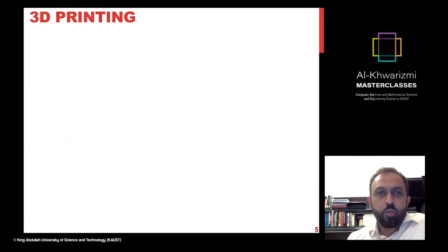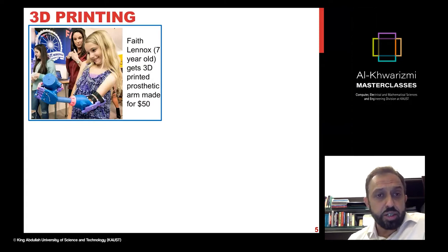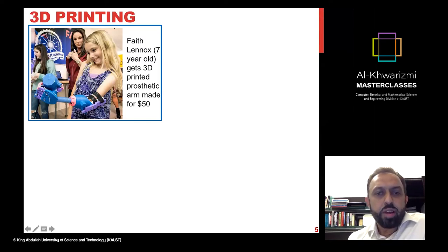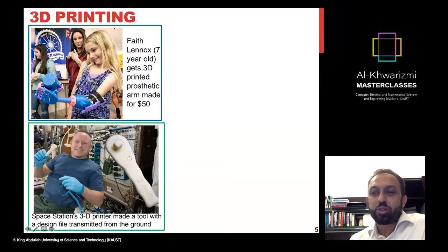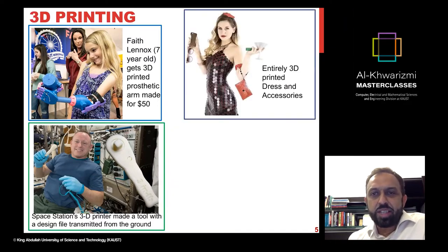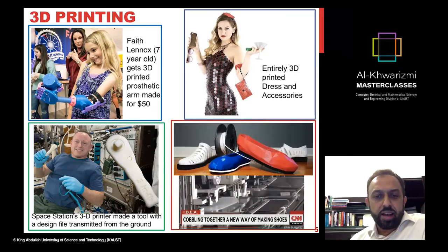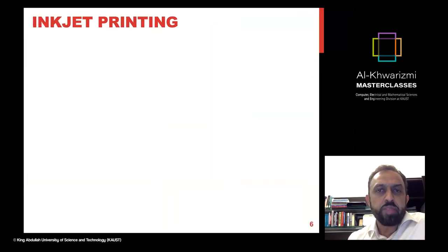3D printing, as part of additive manufacturing, is being considered the next industrial revolution. A prosthetic arm has been 3D printed for just $50, compared to previously thousands of dollars. In the International Space Station, when a tool was needed, the design file was sent up and printed right there. From clothing to shoes, 3D printing is taking over many aspects of life, and electronics is not far behind.